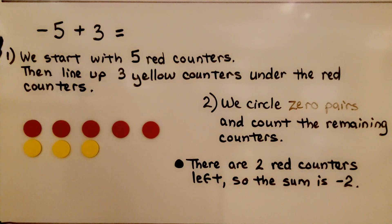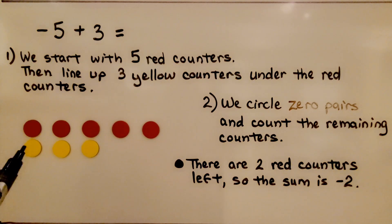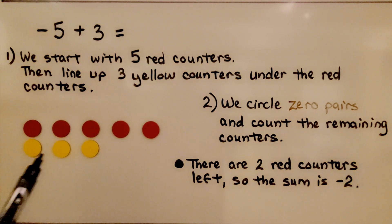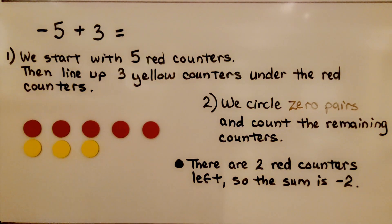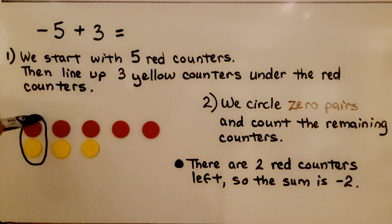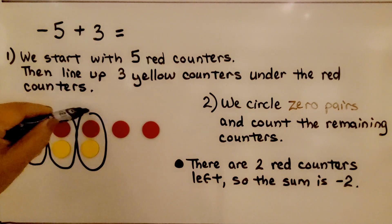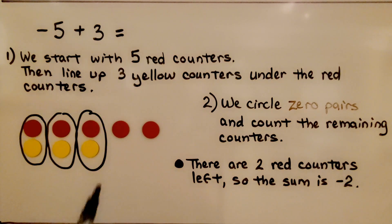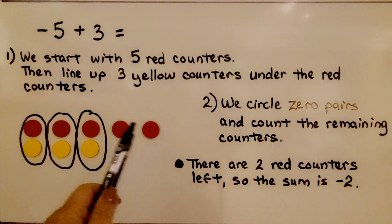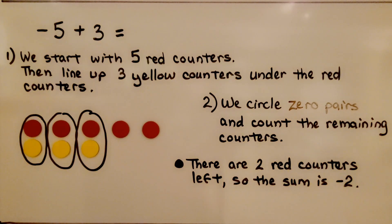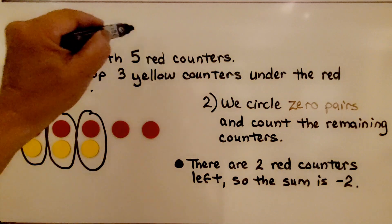Here we have negative five plus three. We start with five red counters for negative five, then line up three yellow counters for positive three under each red counter. We circle zero pairs — one, two, three — and count the remaining counters. There are two red counters left, so the sum is negative two.